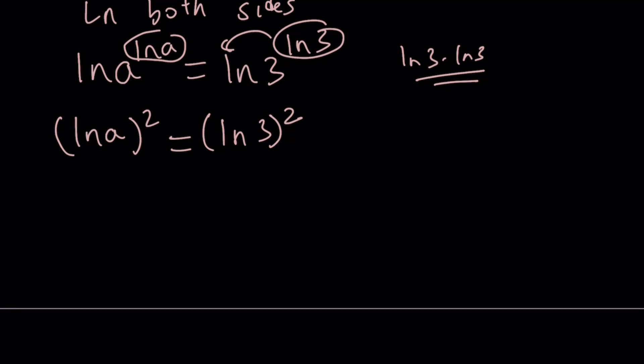So, when two squares are equal to each other, it has two meanings. You can put them on the same side, do the difference of two squares thing. Or, you can think about it this way: ln a equals ln 3 or ln a equals negative ln 3.